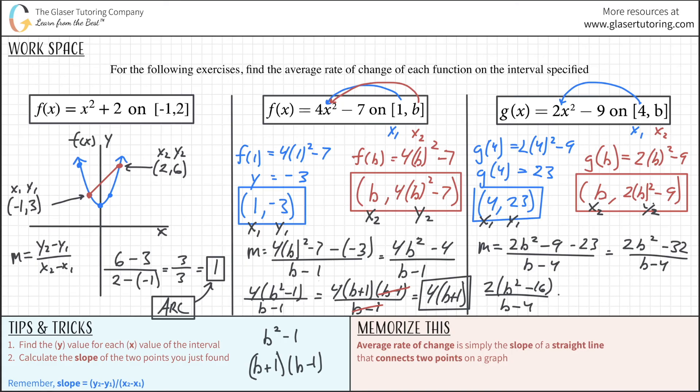And now, oh, here we go again, a perfect square. You start to see patterns. So this is 2 times b plus 4, b minus 4, all over b minus 4. And lo and behold, these cancel, leaving us with the final answer now for the average rate of change of 2 times b plus 4. Voila.